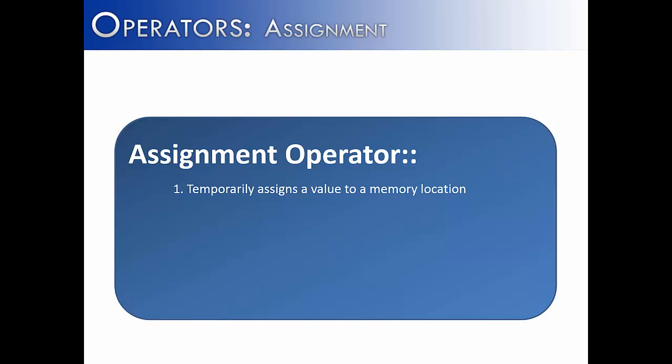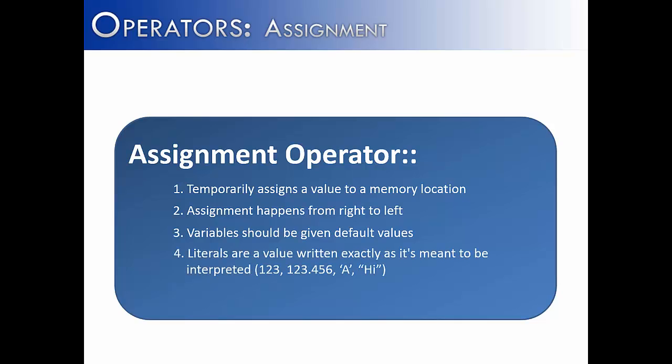The assignment operator's purpose is to assign a value to a memory location. Now, that does not mean that that memory location is permanently going to be the value that we assign it there. As we've shown, you can change the value that goes inside of that particular memory location. Assignment happens from right to left. Whatever is on the right side of the assignment operator is going to be assigned into the left. It will never be the other way around. Variables should be given default values. And this process is called initialization, or to initialize variables. Whenever writing a program, you should always give it a starting value so the program has some place to go with the variable.